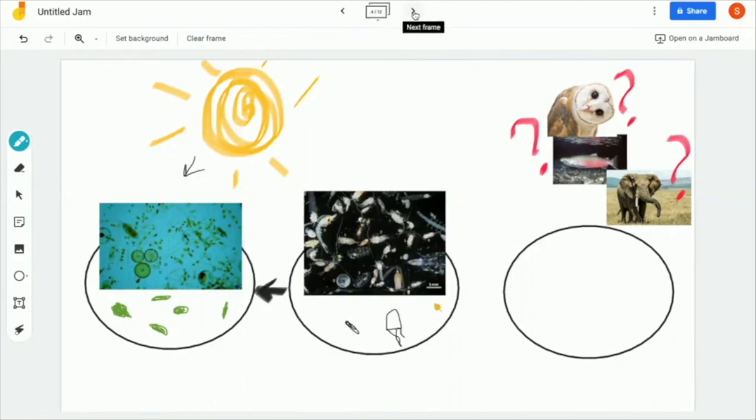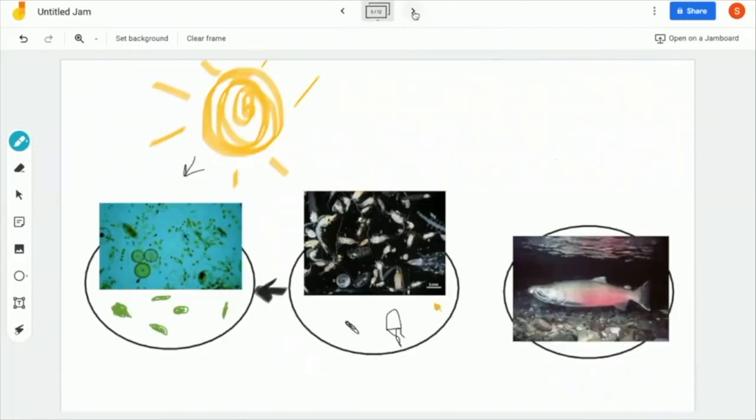Well if you guessed salmon then you are correct. Salmon like you all have guessed eat zooplankton. Now let's go ahead and summarize our food chain.